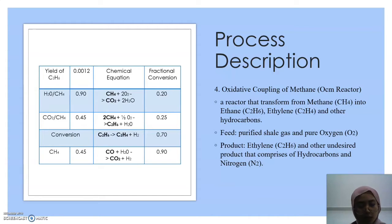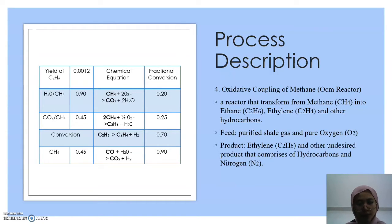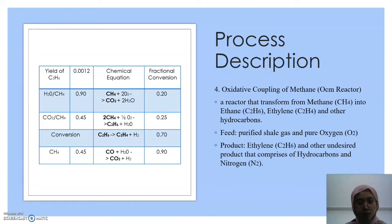There are 4 chemical equations for this process in the OCM reactor. First, methane and oxygen produce carbon dioxide and water, with a fractional conversion of 0.20. Second, methane and oxygen produce ethane and water, with a fractional conversion of 0.25. Third, ethane produces ethylene and hydrogen, with a fractional conversion of 0.70. Finally, carbon monoxide and water produce carbon dioxide and hydrogen, with a fractional conversion of 0.90.